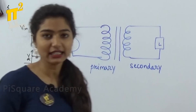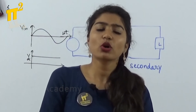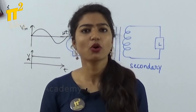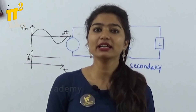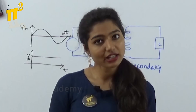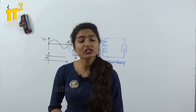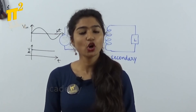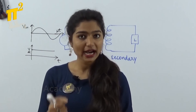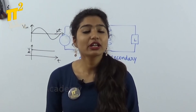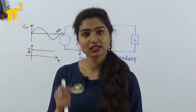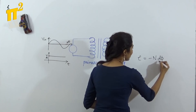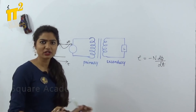To understand how a transformer works, we need to know its principle. The principle of a transformer is electromagnetic induction. Electromagnetic induction comes from Faraday's law. Faraday's law states that an EMF is induced in a conductor whenever there is a changing magnetic field. The second law tells you that the magnitude of EMF induced is directly proportional to the rate of change of flux. From there the famous equation E = −N dΦ/dt comes. So till now nothing new.